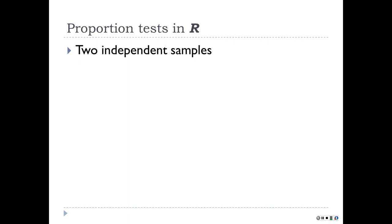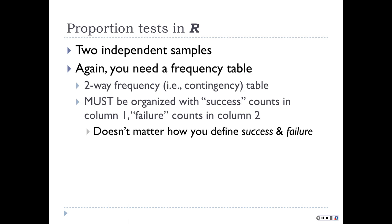For two independent samples you need a frequency table — specifically a two-way frequency table or contingency table. It gets a bit fussy: it must be organized with successes in column one and failures in column two. The groups need to be in rows and the condition — yes/no, this/that — needs to be in the columns. It kind of doesn't matter which is which, but for interpretation it helps to arrange it the way you want.